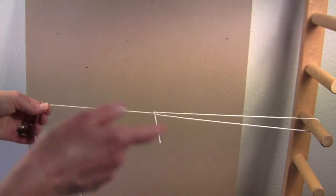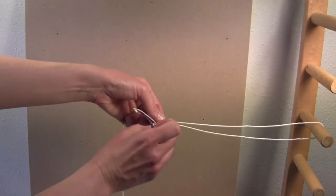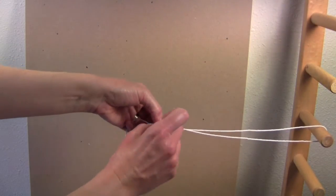Also, this is my warping board. If I had just done a whole floor loom warp, I would do this knot around the last end to hold it in.